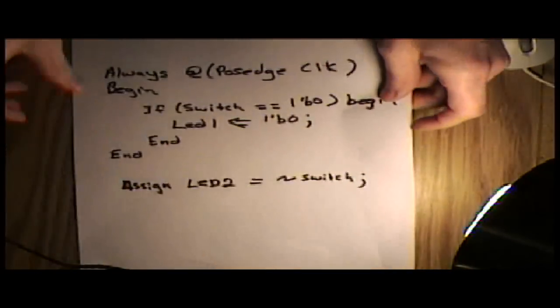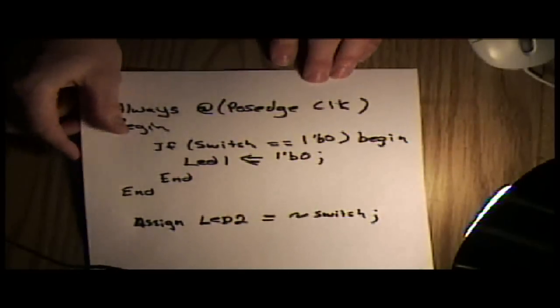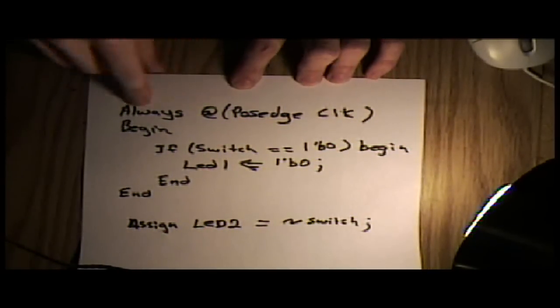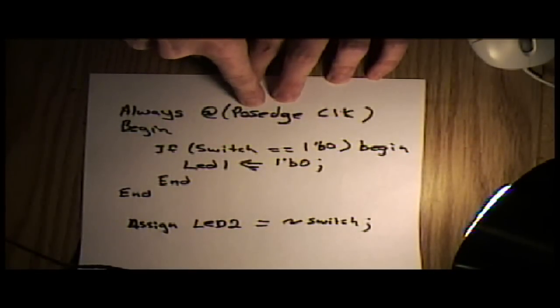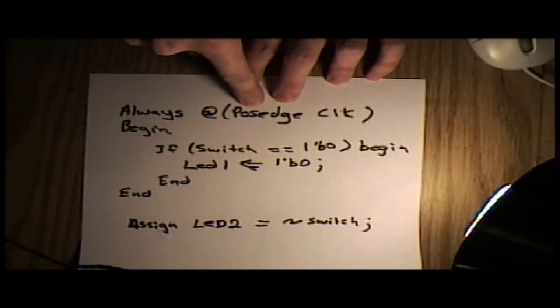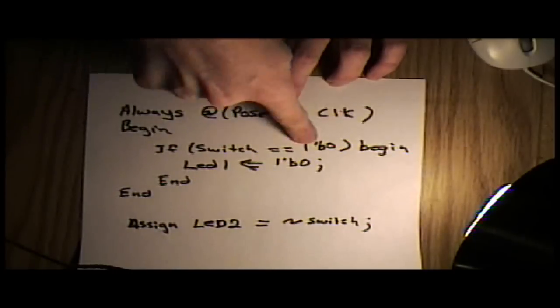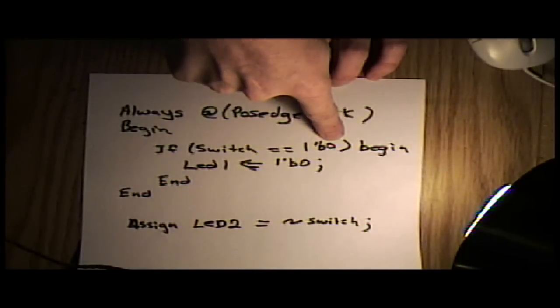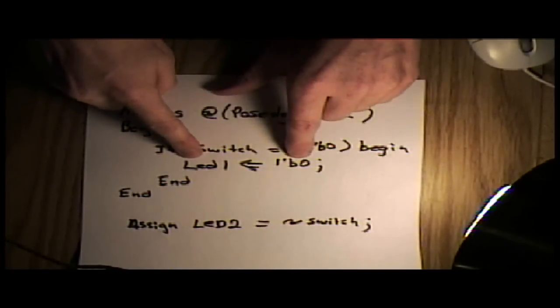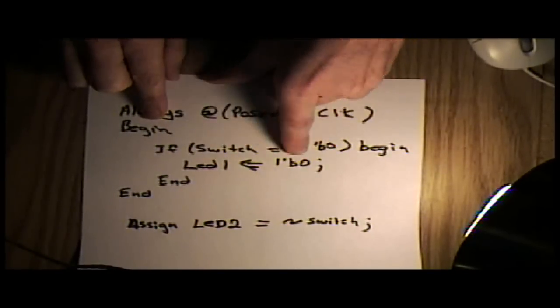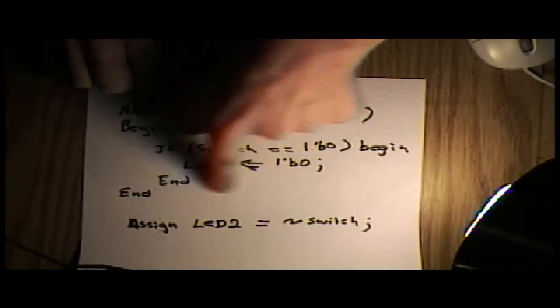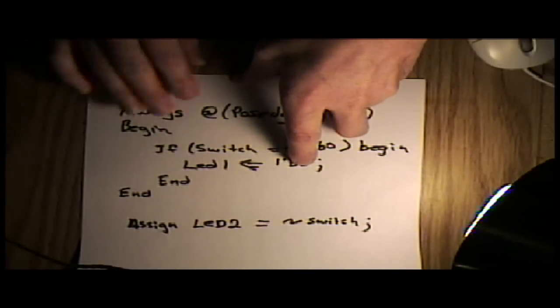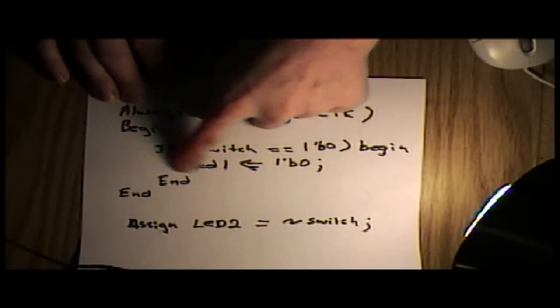If you look at the code, this is what the Verilog code would look like for this. You have an always block, which is sensitive to the positive edge transitions of the clock. And then you write, if switch equals zero, which is when you close the switch, begin. LED one, so I had two LEDs on this, LED one gets assigned zero, and that's end. That's all that ever can happen to LED one, that pin on the FPGA as it goes to zero. It can never transition out of that again.